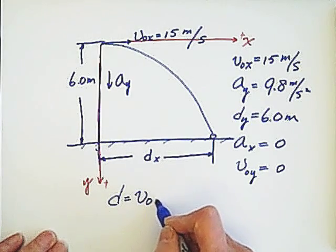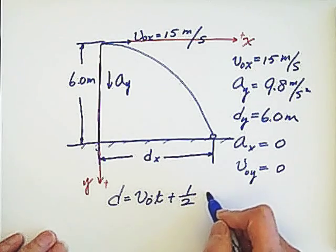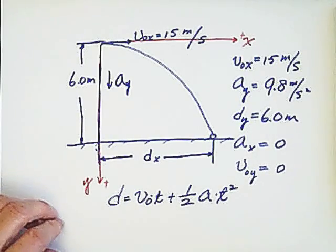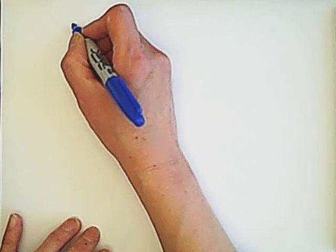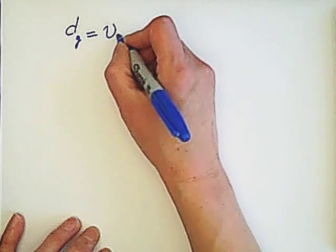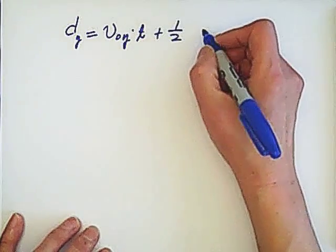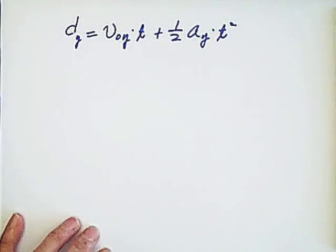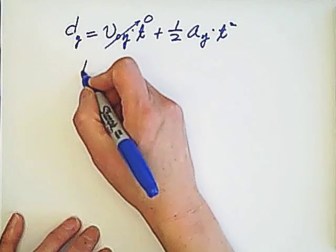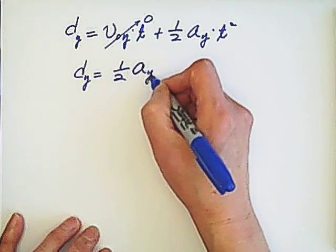The displacement equals initial velocity times t plus 1 over 2 acceleration times t squared. This is the formula working both x direction and y direction. But we need to separate in different situations. On the y direction we have dy equals v0y times t plus 1 over 2 acceleration times t squared. Because initial velocity equals 0 on y direction this is equal to 0. So we have dy equals 1 over 2 ay times t squared.